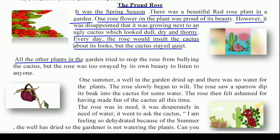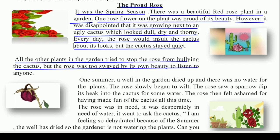All the other plants in the garden tried to stop the rose from bullying the cactus, but the rose was too swayed by its own beauty to listen to anyone. Jitne bhi garden ke doosre plants thay, woh sab us rose ko cactus ki bullying karne se rokate thay. Bullying ka matlab hai kisi ki insult karna, ya kisi ke saath aisa kaam karna jis se uski bezizti ho ya usse neecha dikhaya jai.